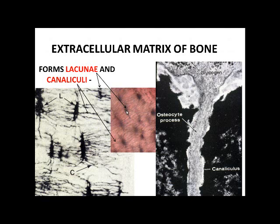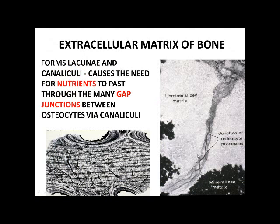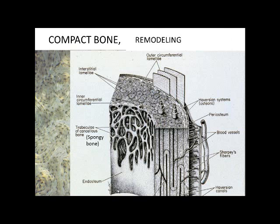In our specimen we'll see lacunae — those openings where the cells would be — and canaliculi, where one cell touches another cell. In those channels, where one cell touches another, you have gap junctions. Gap junctions are the source of nutrients being passed from one cell to another. As a blood vessel is present, nutrients are passed through the canaliculi via gap junctions — that's how cells inside bone get nutrients from the bloodstream.